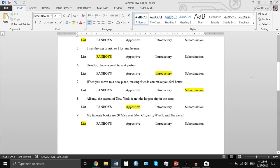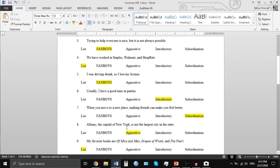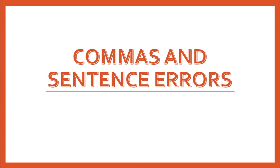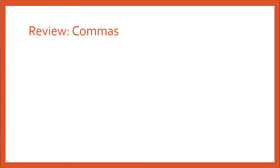That is the homework assignment, and as I mentioned we're going to go through appositives in more detail in just a minute. To start off, we're going to review a little bit about how commas work and when they're supposed to be used, and then we're going to talk about some sentence errors — to sort of move on from commas but still be working on the same kind of material. With commas and sentence errors, first we need to review when we are supposed to use commas.